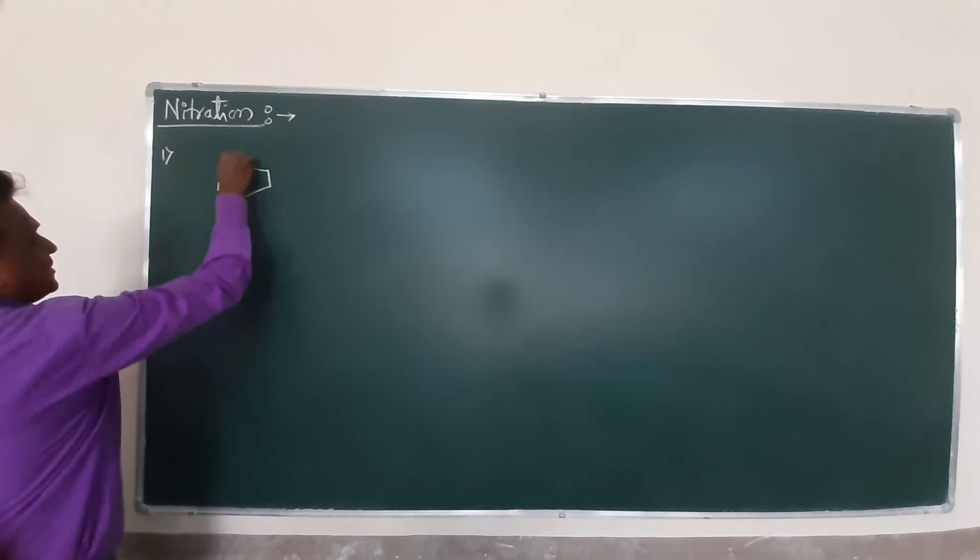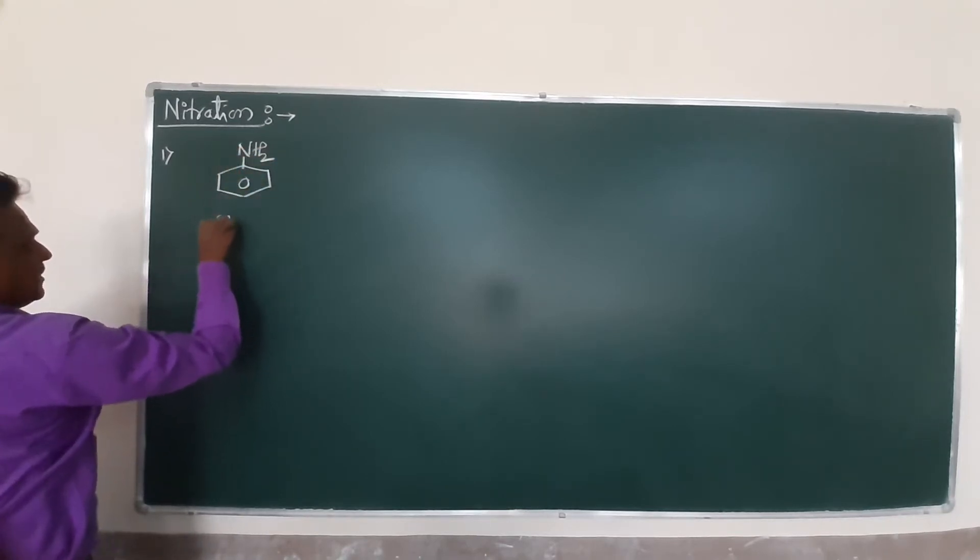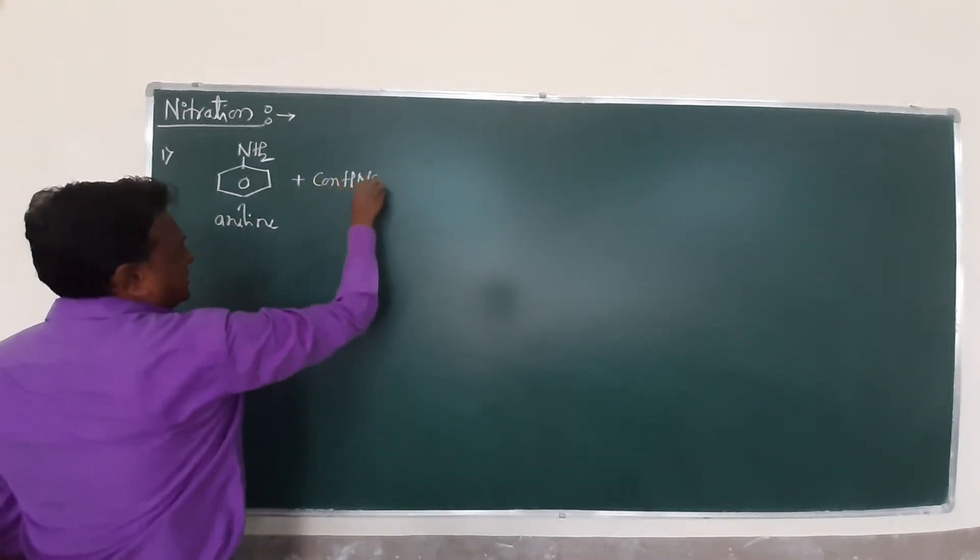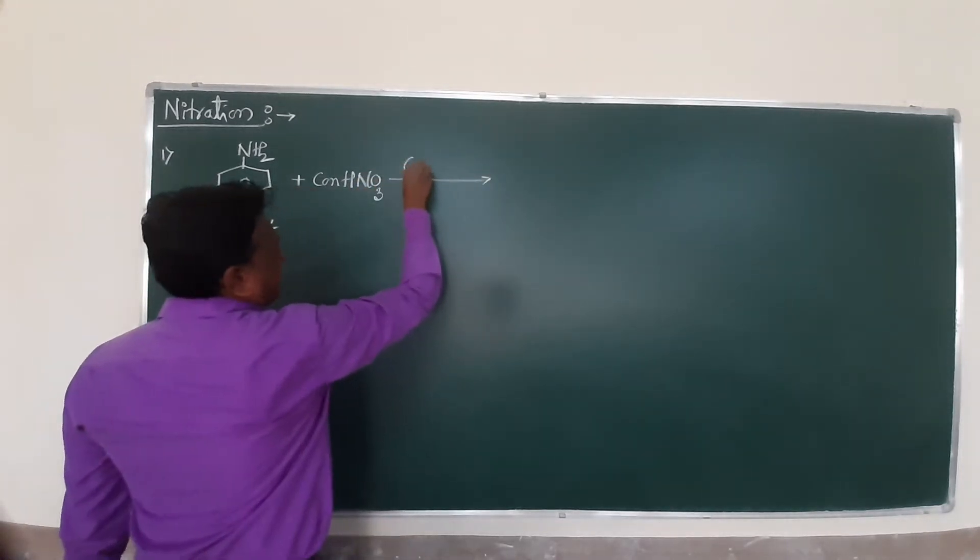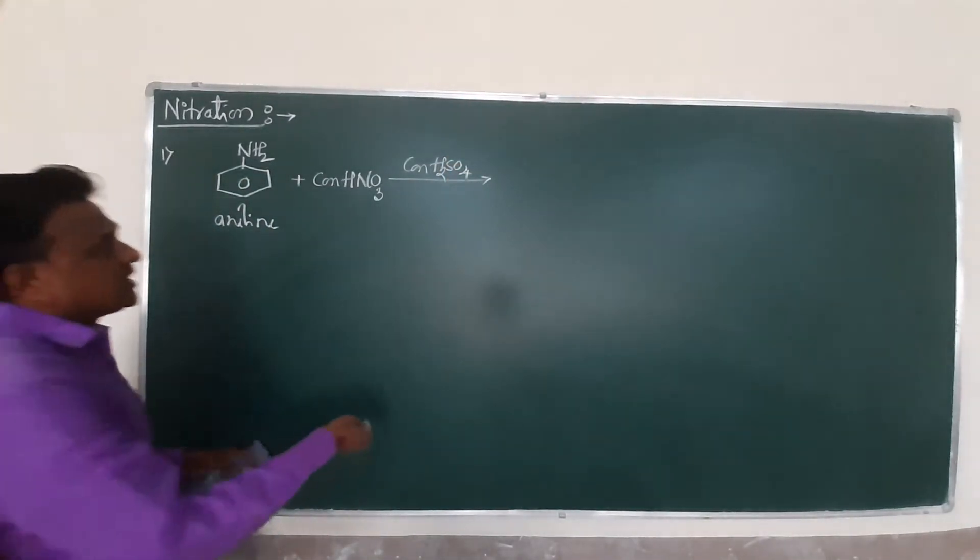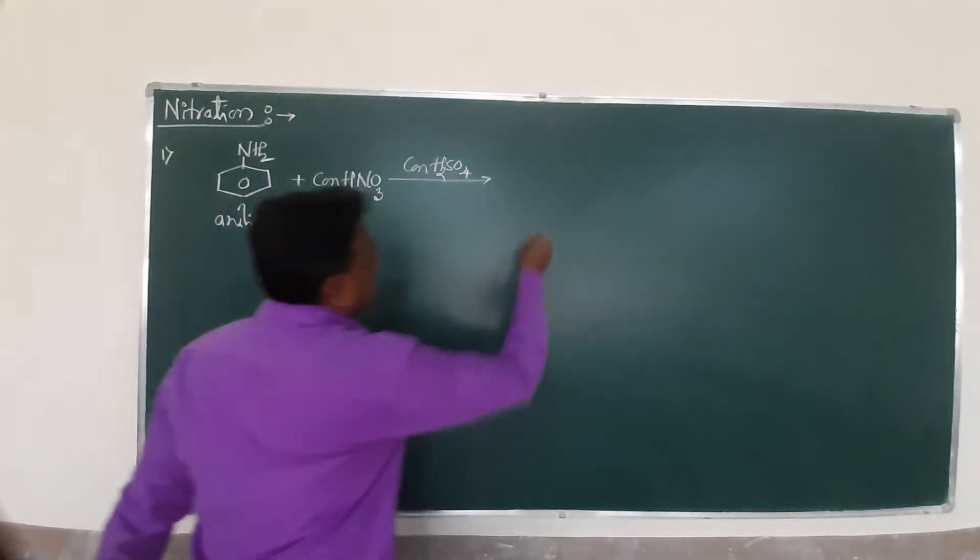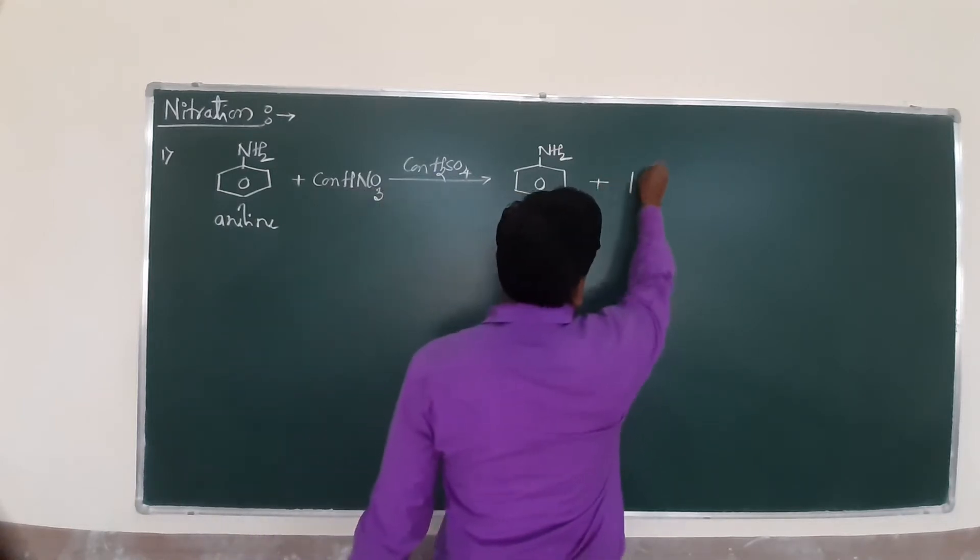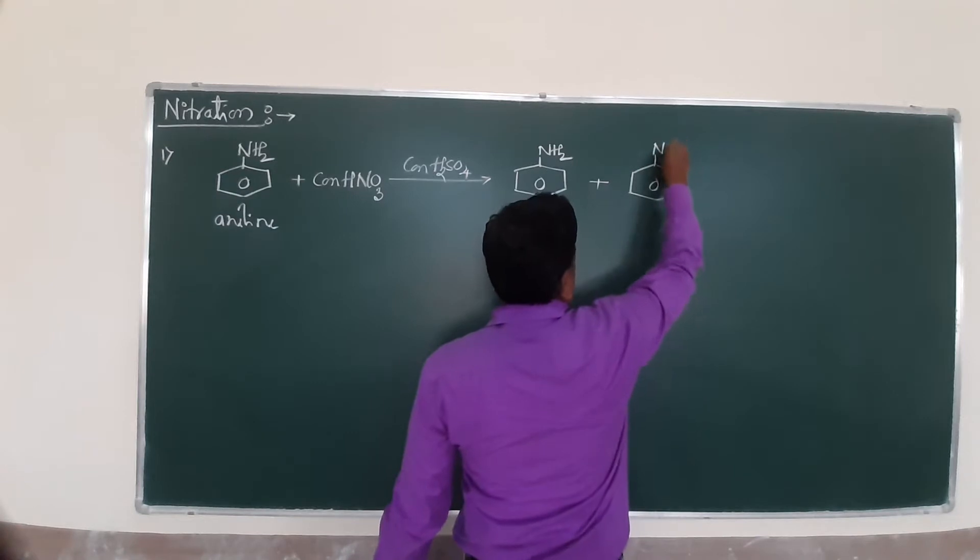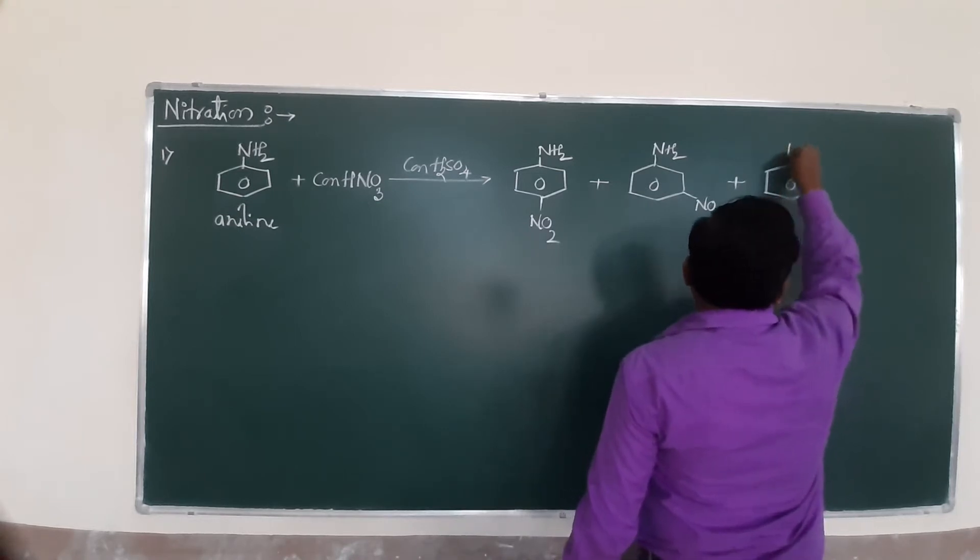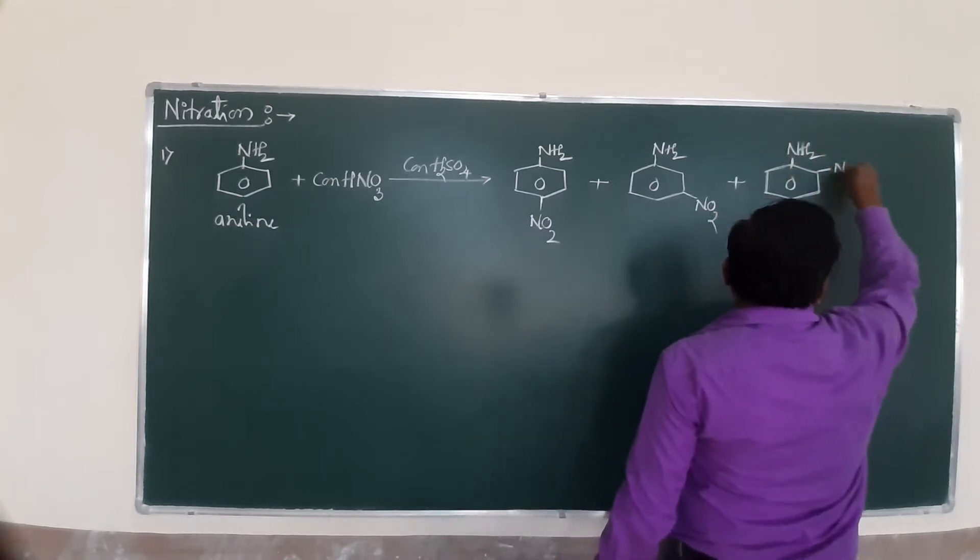So we have an aniline. This aniline undergoes nitration, means it reacts with concentrated nitric acid in presence of concentrated sulfuric acid. It reacts with concentrated nitric acid and concentrated sulfuric acid to form three products. The first substitution is para NH2. And second one, same aniline, is meta substitution. And third one, also same aniline, is ortho substitution.